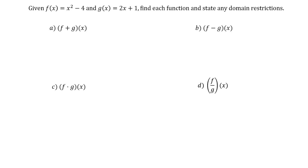So f plus g of x, well that just means f of x plus g of x. So you're basically just combining like terms. So we've got x squared minus 4 plus 2x plus 1. Let's just see if we can simplify. So x squared plus 2x and negative 4 plus 1 would be minus 3. There you go.